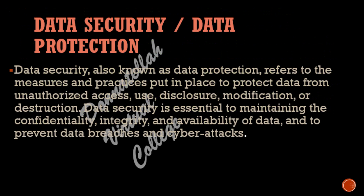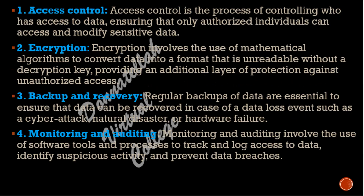Data security, also known as data protection, refers to the measures and practices put in place to protect data from unauthorized access, use, disclosure, modification, or destruction. Data security is essential to maintaining the confidentiality, integrity, and availability of data, and to prevent data breaches and cyberattacks. 1. Access control: access control is the process of controlling who has access to data, ensuring that only authorized individuals can access and modify sensitive data. 2. Encryption: encryption involves the use of mathematical algorithms to convert data into a format that is unreadable without a decryption key, providing an additional layer of protection against unauthorized access. 3. Backup and recovery: regular backups of data are essential to ensure that data can be recovered in case of a data loss event such as a cyber attack, natural disaster, or hardware failure.